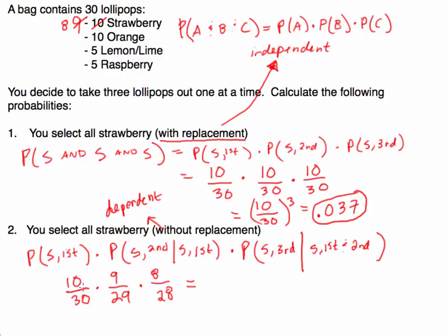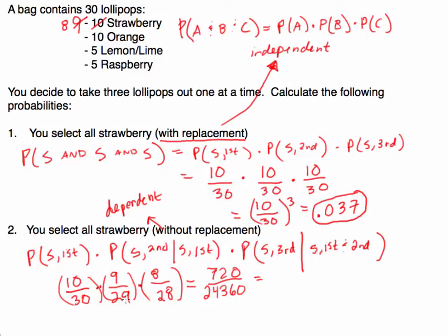So let's calculate this. I multiply across the numerators: 10 times 9 times 8 equals 720. Along the denominators: 30 times 29 times 28 equals 24,360. Use parentheses in your calculator to avoid order-of-operations mistakes. So 720 divided by 24,360 gives approximately 0.0295566, which rounds to 0.030 at the thousandths place.